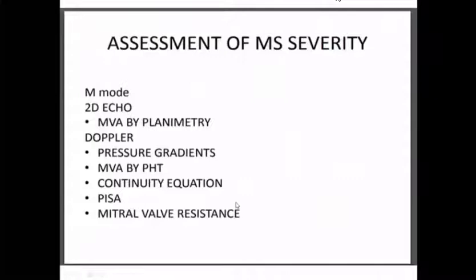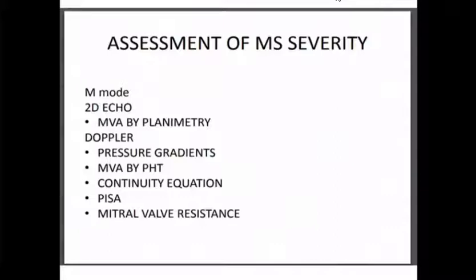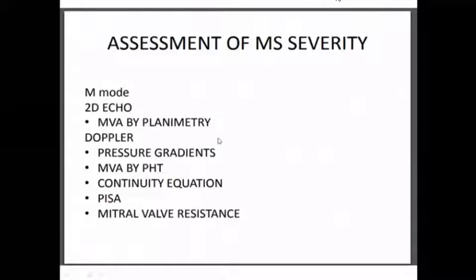Severity assessment of mitral stenosis involves M-mode echo, 2D echo with planimetry, and Doppler assessment including pressure gradients and mitral valve area by pressure half-time. Other methods such as continuity equation, PISA, and mitral valve resistance are less commonly used but are available options. The conclusion should integrate not just echo measurements but also clinical assessment, with M-mode, 2D, and Doppler findings collectively forming the complete picture.